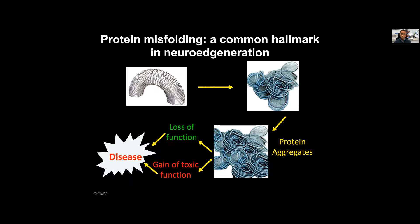Traditionally in recent years we've been thinking this was primarily due to a gain of toxic function — that these aggregates became toxic and could cause problems. But we need to consider that if we change the normal three-dimensional structure of a protein, we will also affect its normal function. So most likely it is both a combination of loss and gain of toxic function that ultimately contributes to disease.